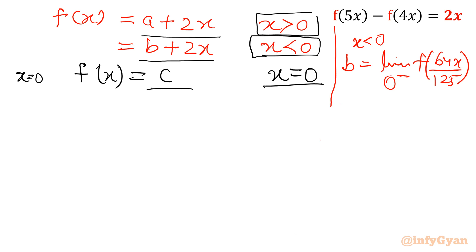To make this function continuous or for continuity condition to hold, a equal to b equal to c. Once this is true we can write f of x is equal to a plus 2x. So we will presume that the function is continuous. So f of x is equal to a plus 2x for all x belongs to real numbers.